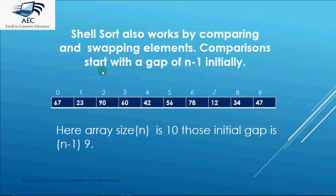We'll be comparing the elements which are at the distance of 8 index then it'll be 7, 6 and so on till it becomes 1. So this is how the comparison goes in case of shell sort.